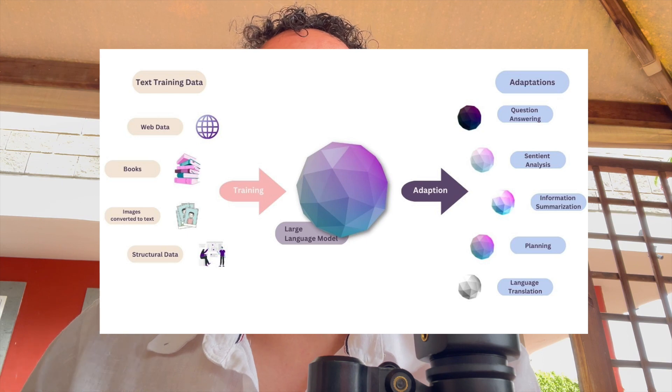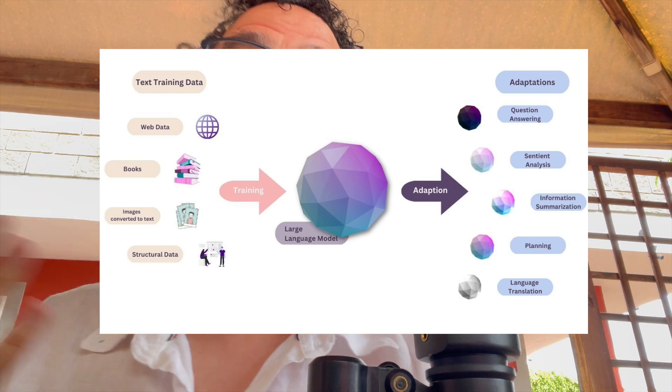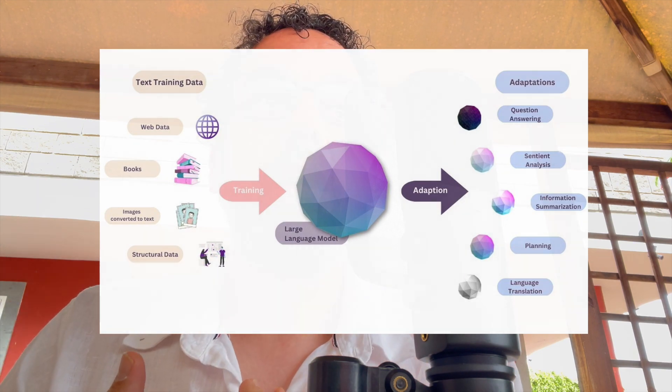Why do the models need this information? A model cannot answer something if it doesn't know what it needs to answer. The problem is that if you try to scrape all those Stack Overflow pages one by one, it's very inefficient. It's much better to have a database with all this information organized — you can filter out bad answers and send only high-quality data to your model. And this is going to be very good for the models.